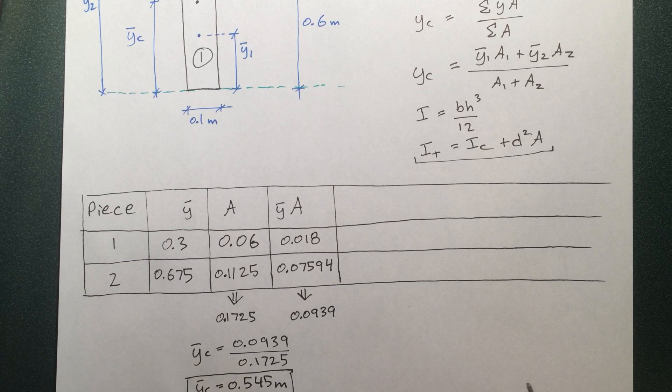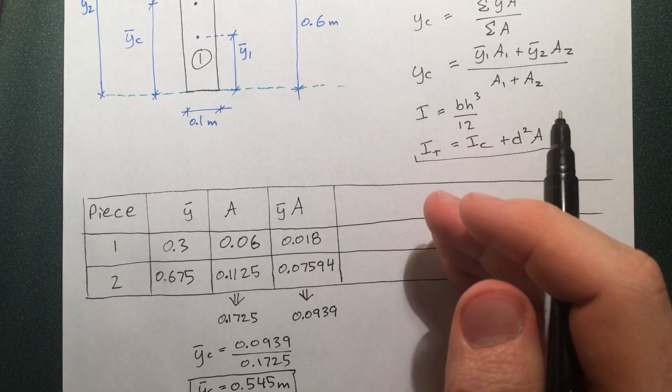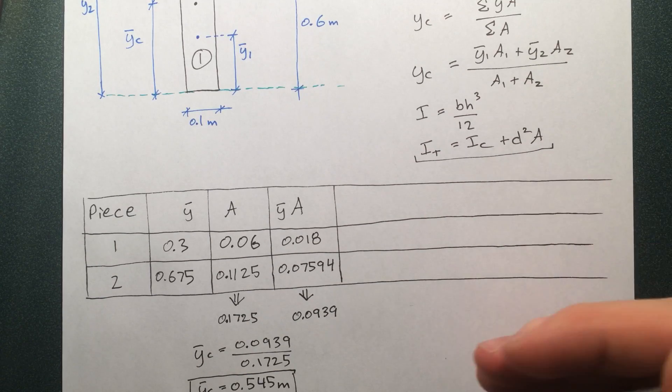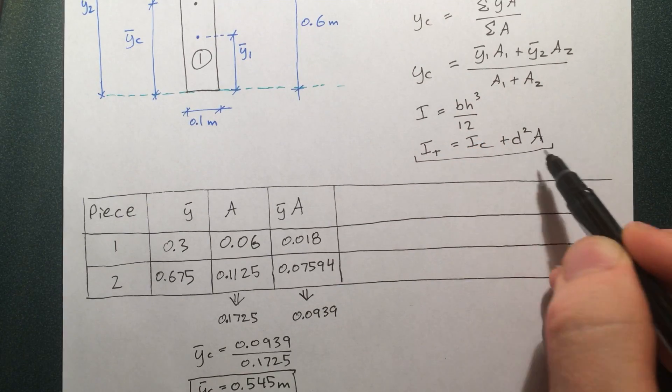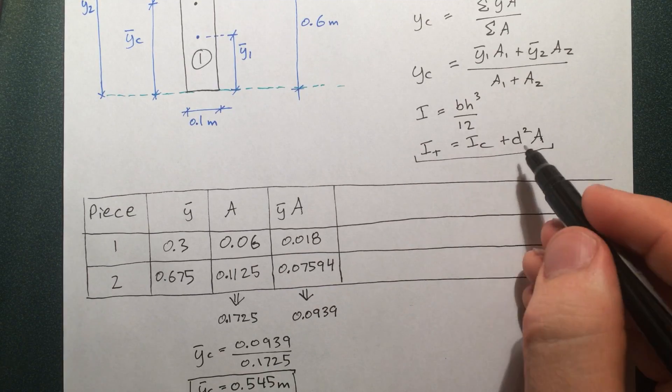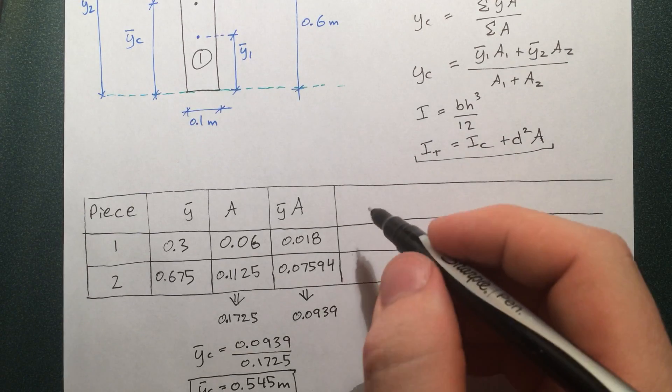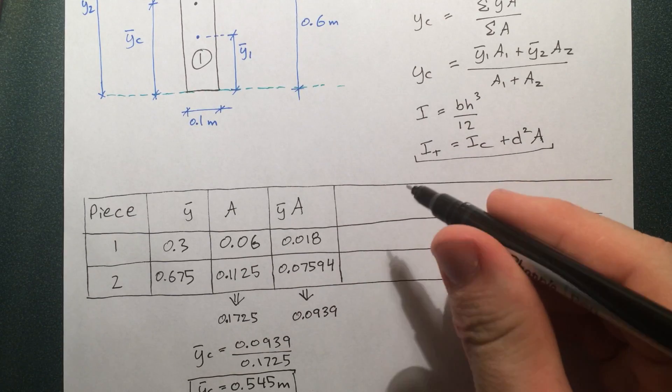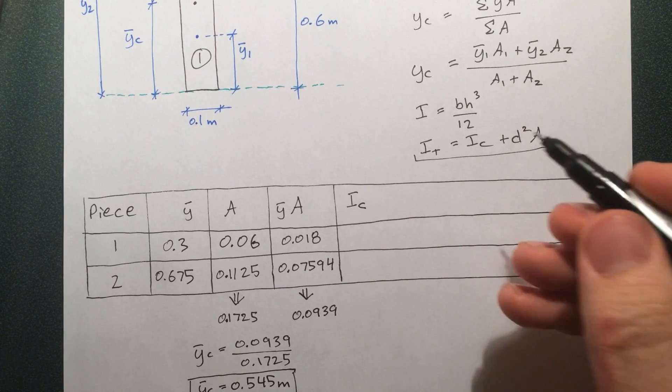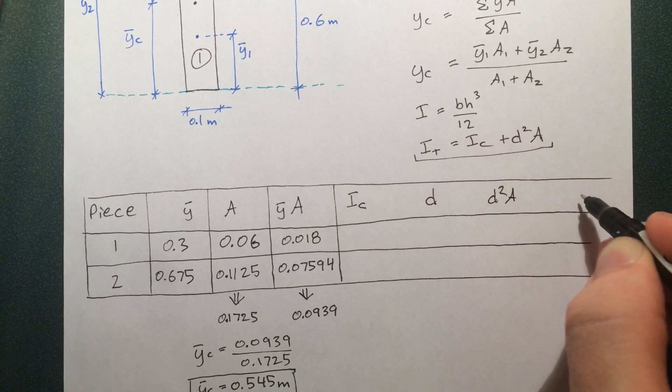This is the parallel axis theorem. To restate it again, the moment of inertia of a piece about an axis that's not its centroid is basically the sum of the moment of inertia about its centroid, plus the distance away from the axis you're talking about to its centroid—that distance squared times the area of the piece. So we need to find all the components of this, essentially I = I_c + d²A. I'm using I here, you can also use M if you want. So let's find I_c, d, d²A, then I_total.